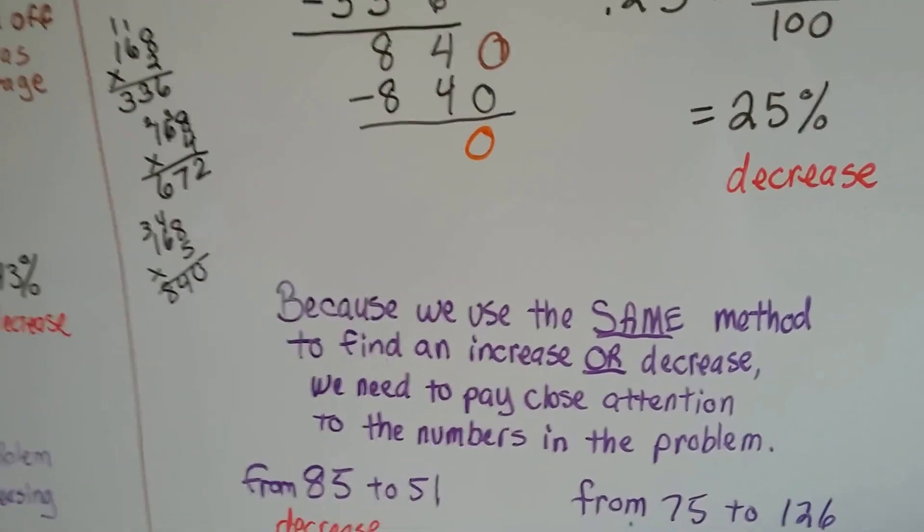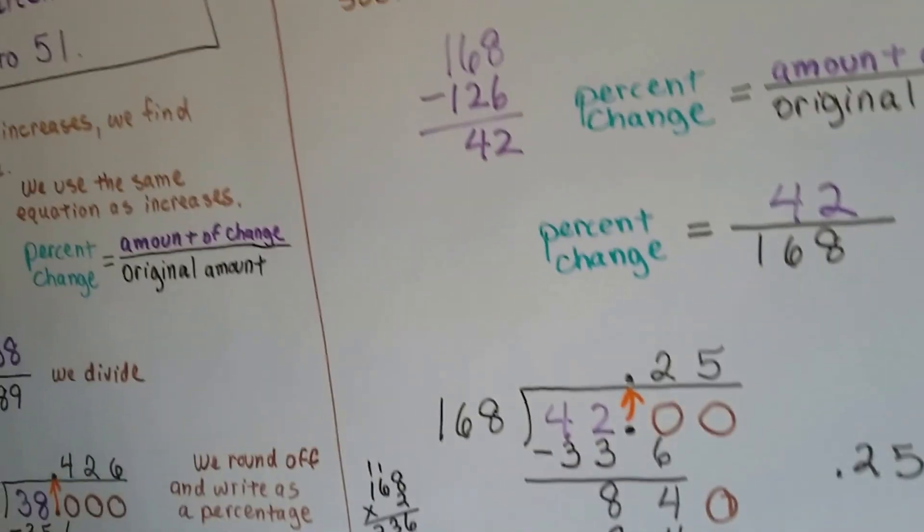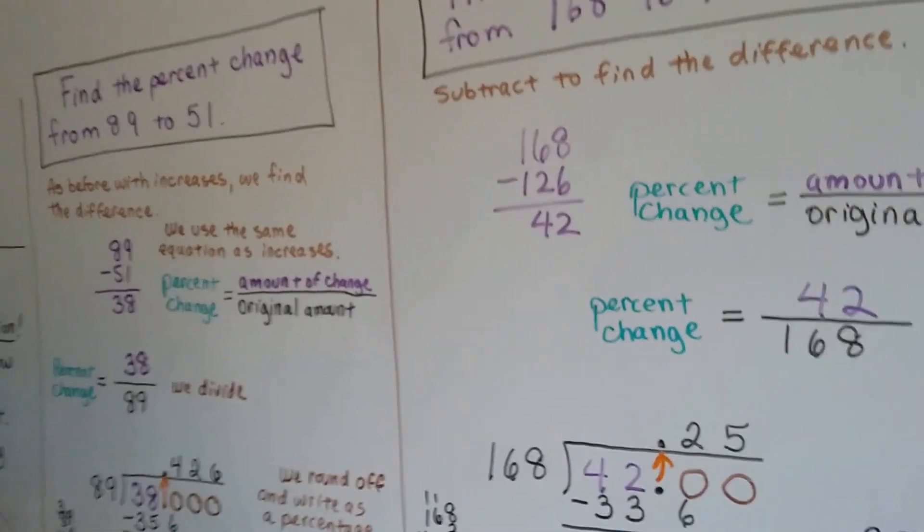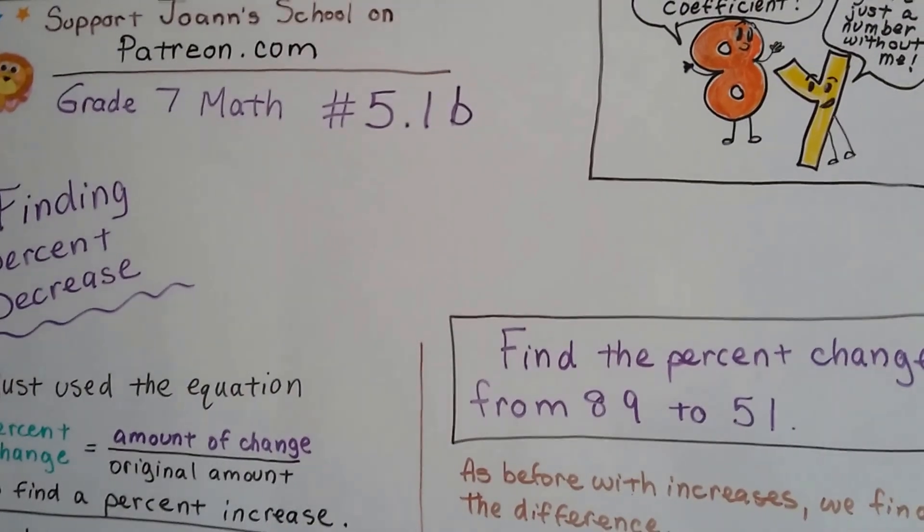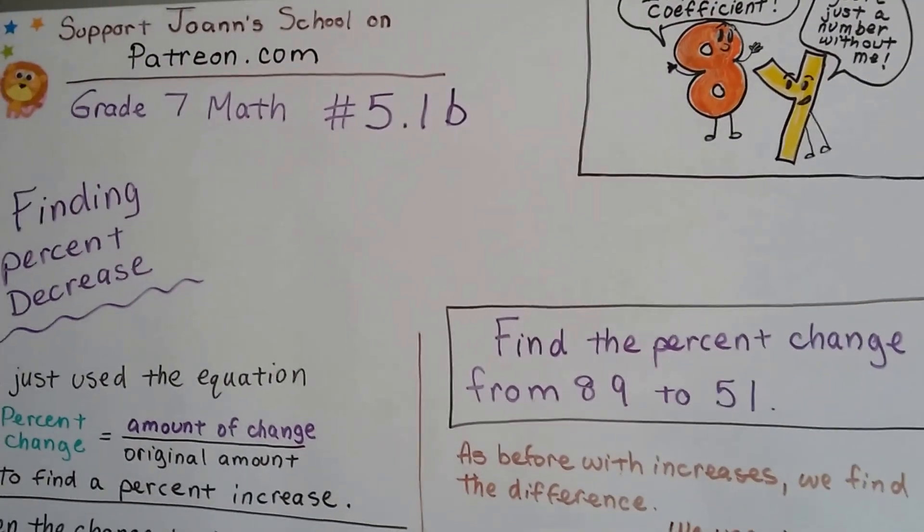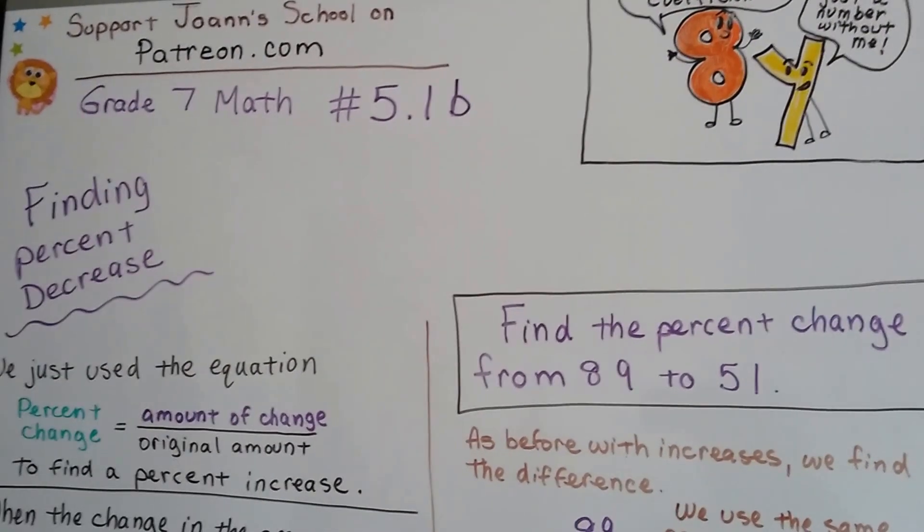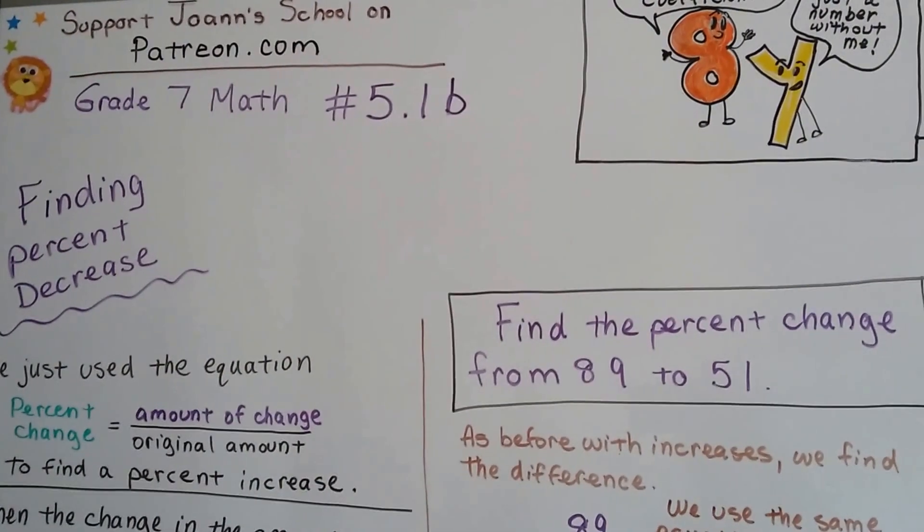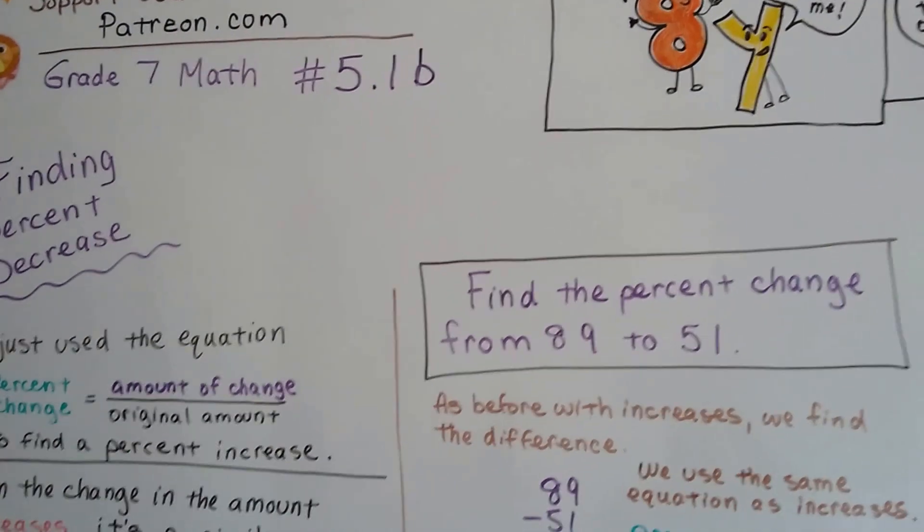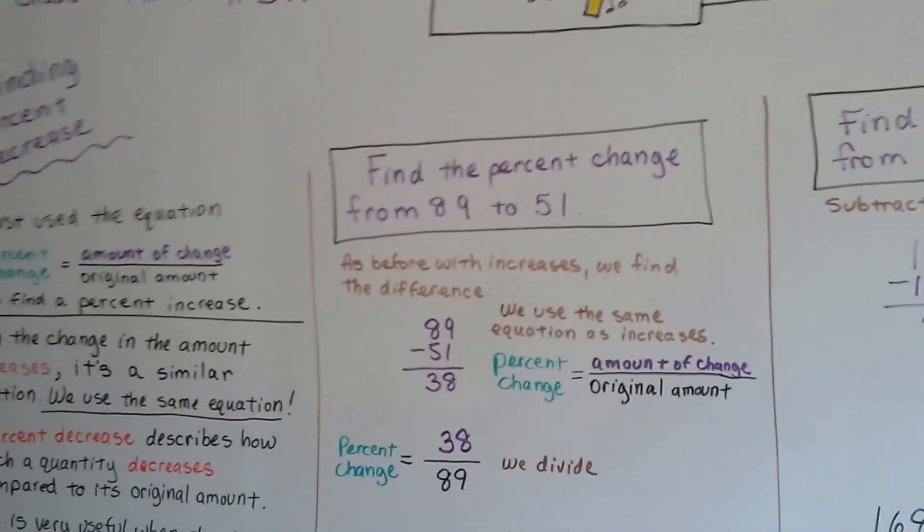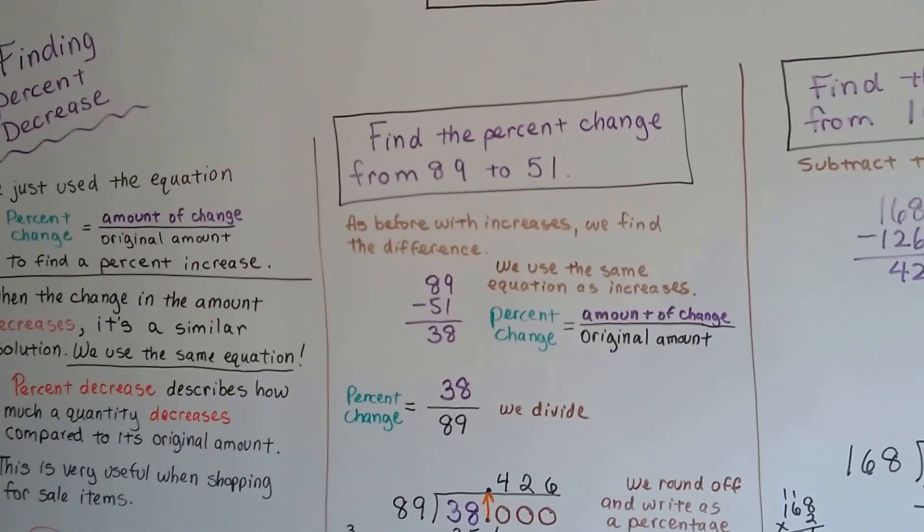That's all. We're going to talk about how to use a percent of change in the next video. That's going to be 51C. And if you feel like I'm helpful and you're doing okay and you'd like to support Joanne's School, you can go to patreon.com and become a monthly patron of Joanne's School for about a dollar a month. And that'll really help me out. I'll see you next video. We'll keep going. You're going to do fine. Bye.